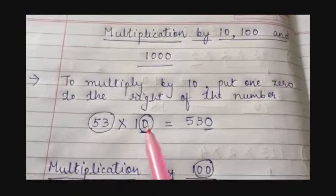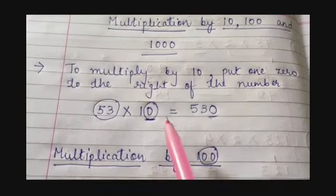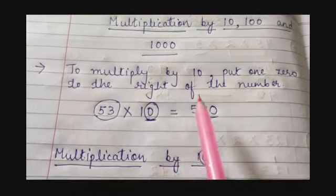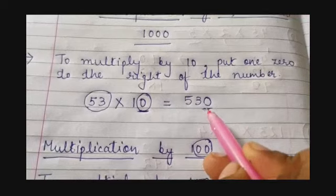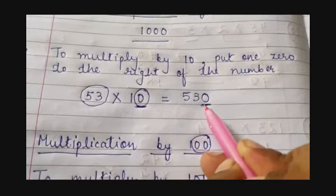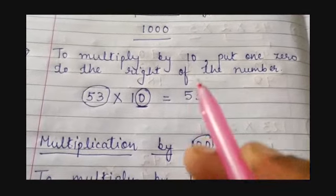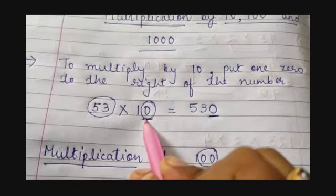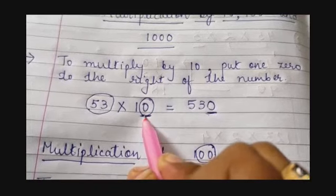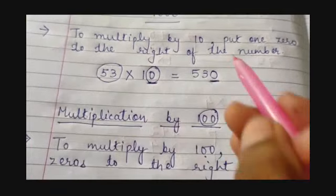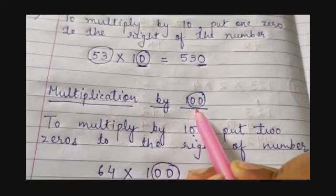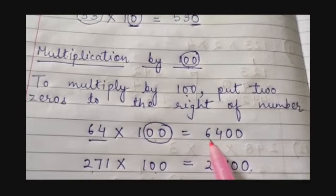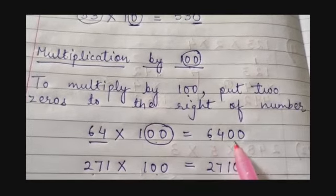As I taught in the last video: if you want to multiply by 10, you will just add 1 zero on the right side — because there is only 1 zero in 10. Similarly, for 100 you have two zeros, so you add two zeros on the right side.